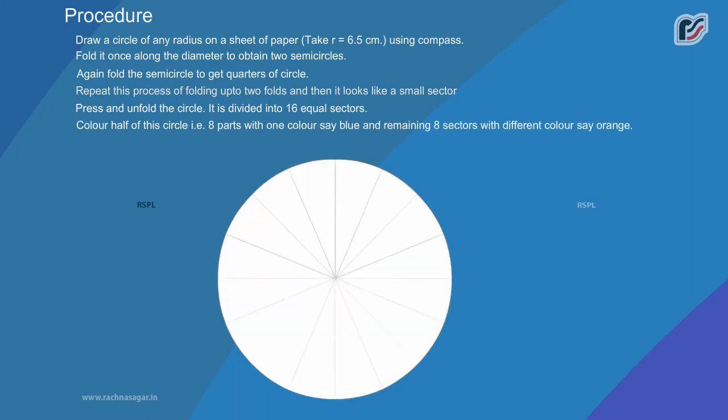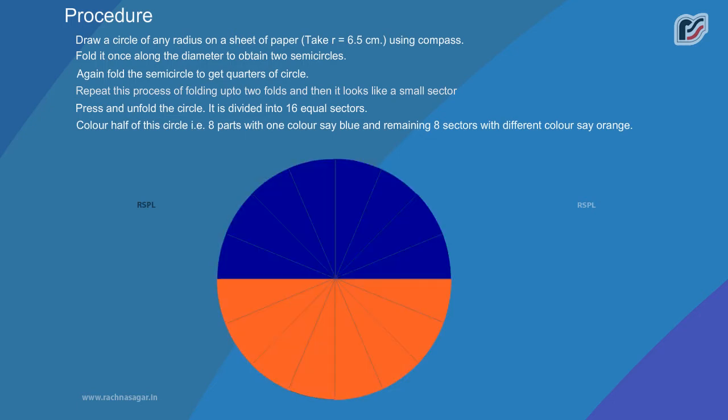Color half of this circle, that is 8 parts, with one colour say blue and remaining 8 sectors with different colour say orange. Cut these 16 different sectors of circle.